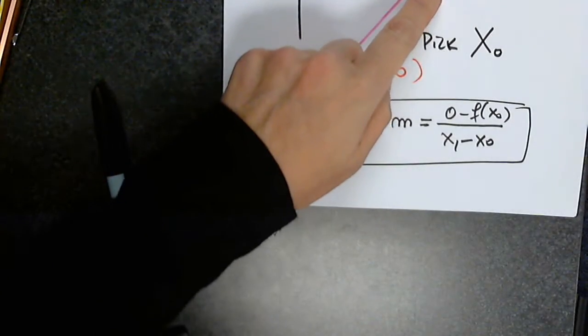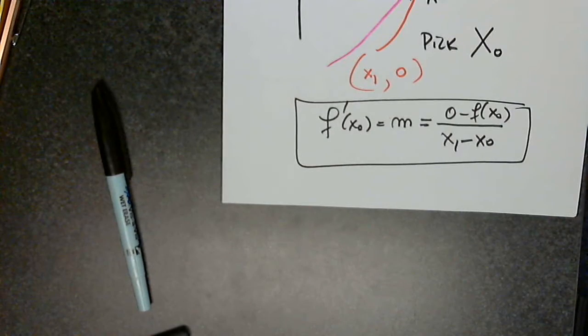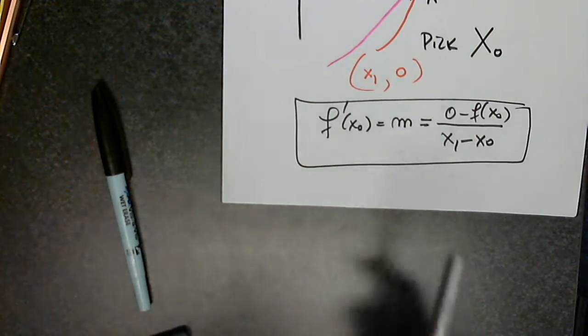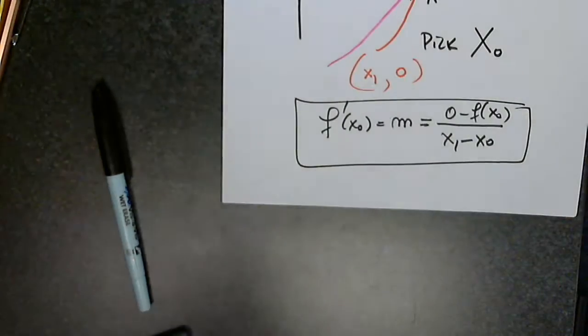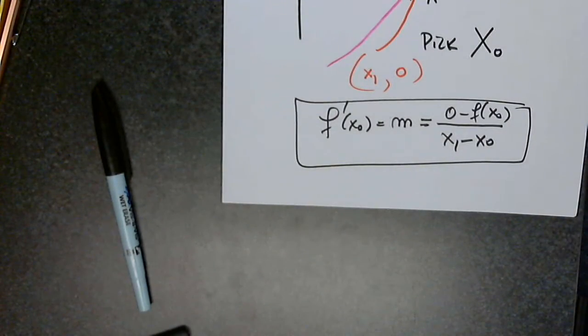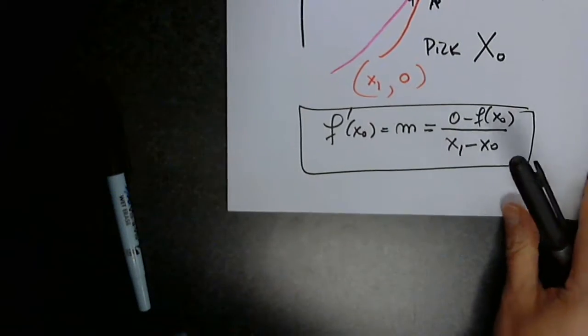I started with x0, but you can say but x0 is such a horrible approximation of r and I would have to agree. But I got x1. Would you say that x1 is a better approximation of r than x0 was? Okay, so let's solve this for x1.